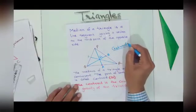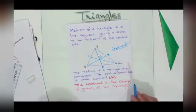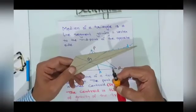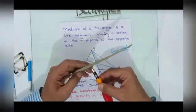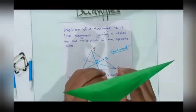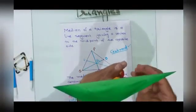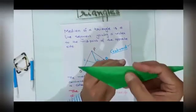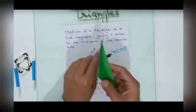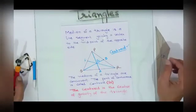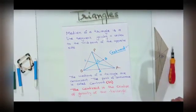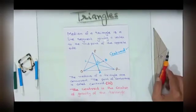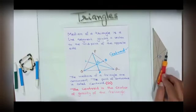The centroid is a very important point within the triangle as it is the center of gravity of the triangle. If I try to rotate the triangle along this point G, it can be done with great ease and the triangle can be balanced easily at this point. Try to find out the importance of the centroid and the orthocenter and how these two points are used in our daily life. Let us meet in the next video. Thank you very much.